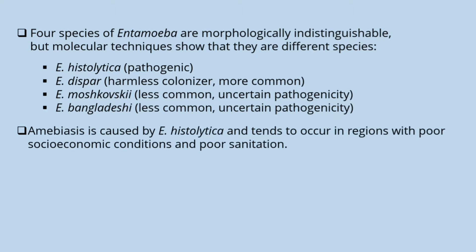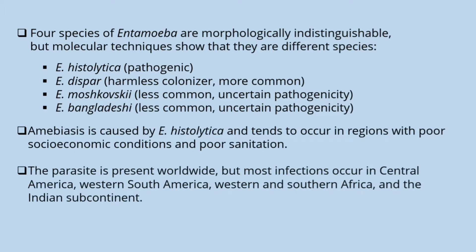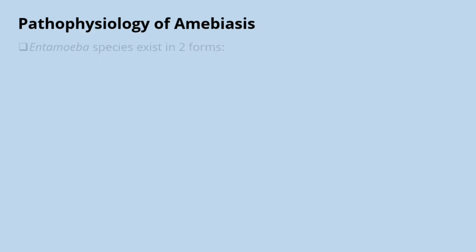Amoebiasis is caused by Entamoeba histolytica, which is the pathogenic species. It tends to occur in regions with poor socioeconomic conditions and poor sanitation. Regarding geographical distribution, the parasite is present worldwide, but most infections occur in Central America, western South America, western and southern Africa, and the Indian subcontinent.